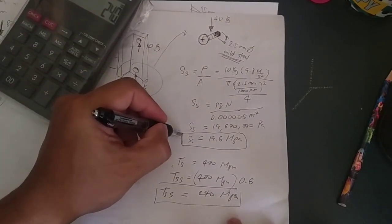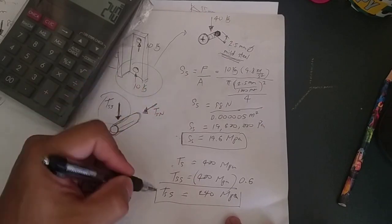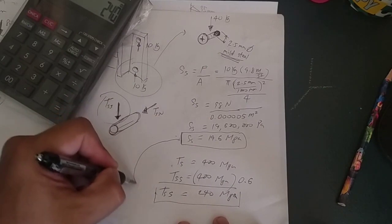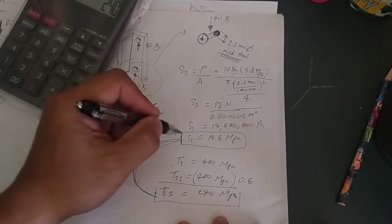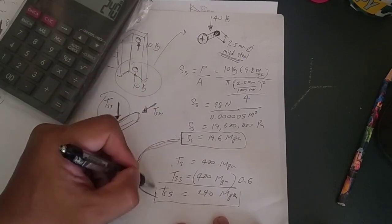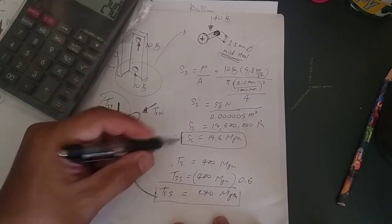So we now have two values here: the shear stress experienced by the screw and the tensile strength of the screw in shearing. So we now have to compare these two. The basic concept is that the shear stress should be less than the tensile strength in shearing. So since it is obviously less than, we are okay.